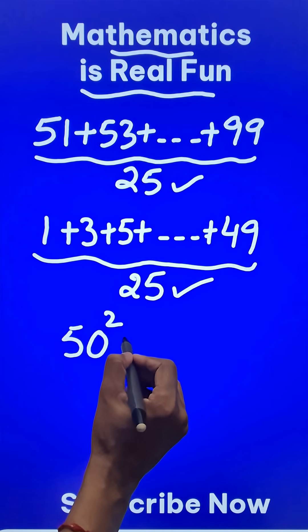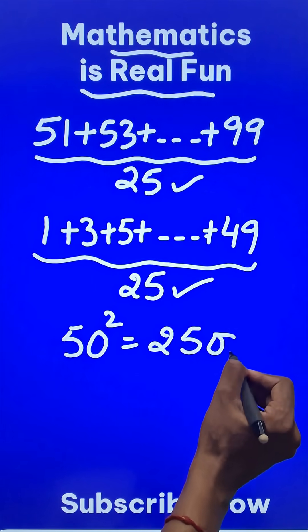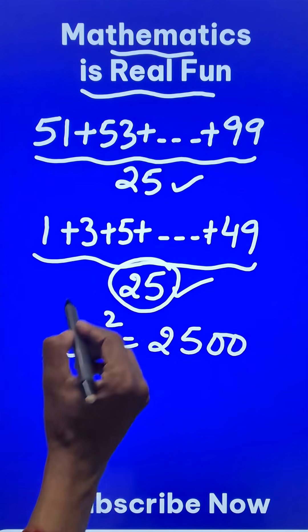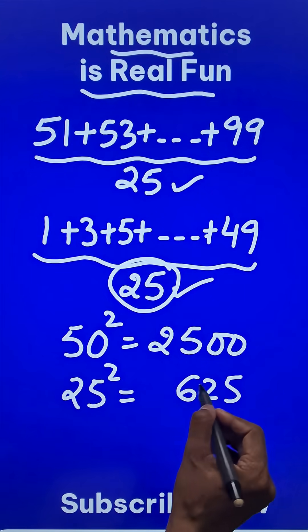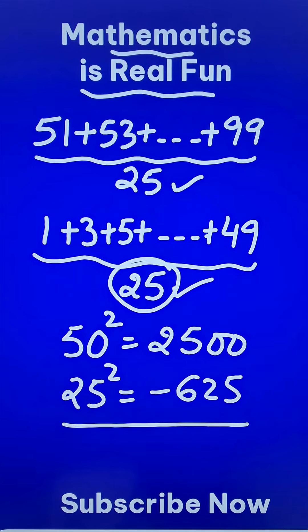Take the square of 50, you get 2500, and then how many are missing? 25 are missing. So take the square of 25, which is 625, and just subtract.